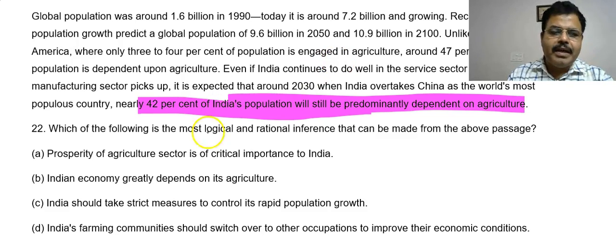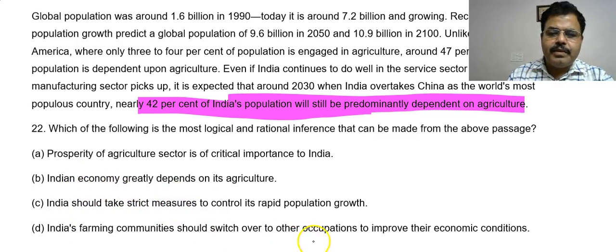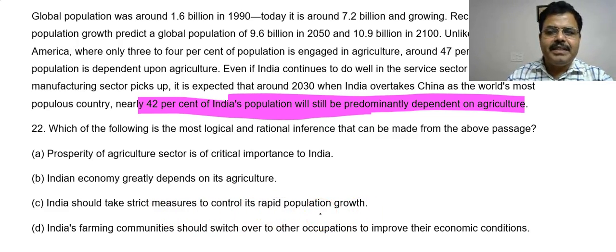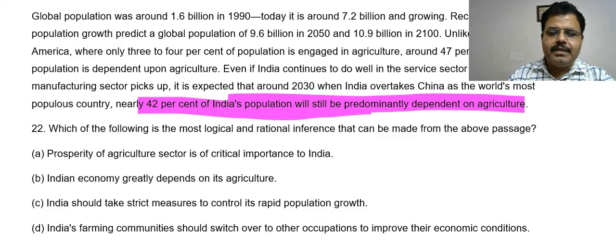Option B: India's economy greatly depends on agriculture — yes, this is exactly what the passage conveys. Option C: India should take strict measures to control rapid population growth — this is not supported by the passage. The passage discusses that population growth is high, but it does not suggest that strict measures should be taken to control it.